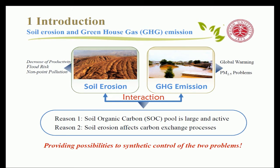Given that the soil organic carbon pool is very large and active, and that soil erosion greatly affects the carbon exchange process between soil and atmosphere, interactions may exist between soil erosion and greenhouse gas emission. So if we try to figure out the direction and magnitude of the CO2 flux induced by soil erosion, it will provide an opportunity for the synthetic control of both of these two major problems.